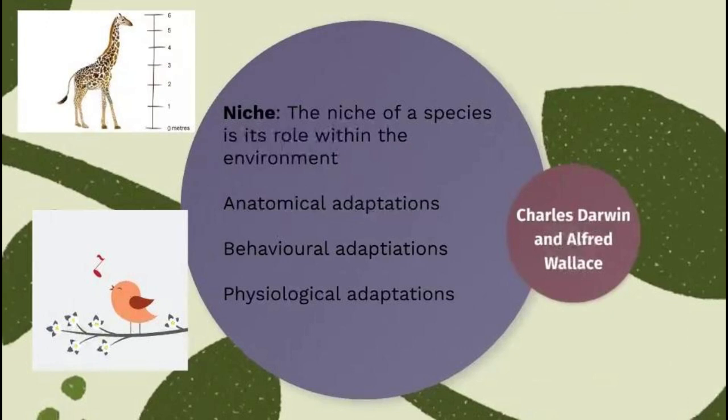The third type is physiological adaptation — processes inside the organism's body. For example, better regulation of temperature or blood flow through the skin, which makes an organism better adapted to extreme climates and therefore more likely to survive.